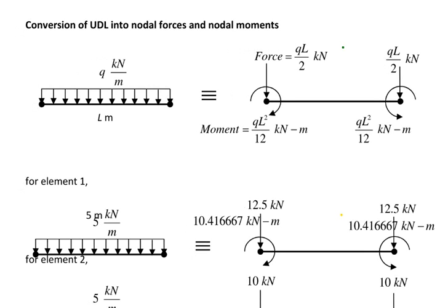For the stiffness matrix of element 2, the same formula applies — EI into 12 divided by L cubed — but with L equal to 4. Changing the length gives different values for element 2's stiffness matrix, completing both element stiffness matrices.